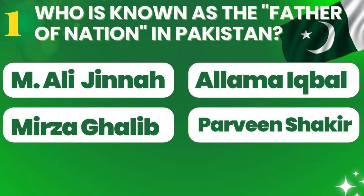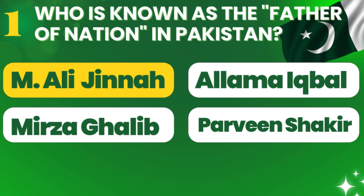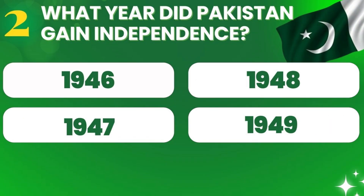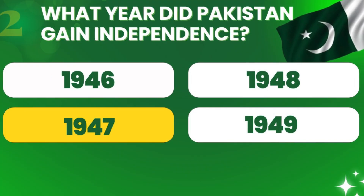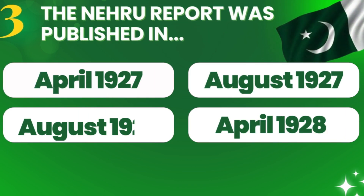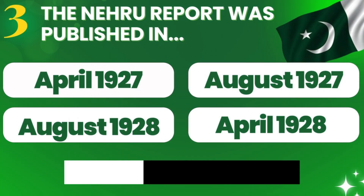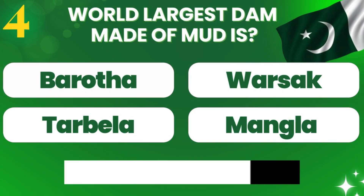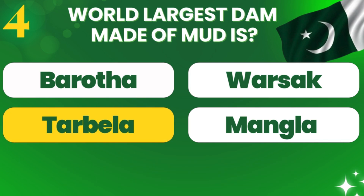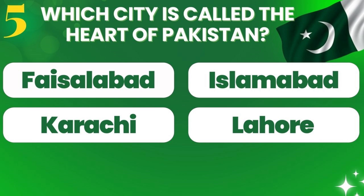Who is known as the father of the nation in Pakistan? What year did Pakistan gain independence? The natural report was published in — world's largest dam made of mud is — which city is called the heart of Pakistan?